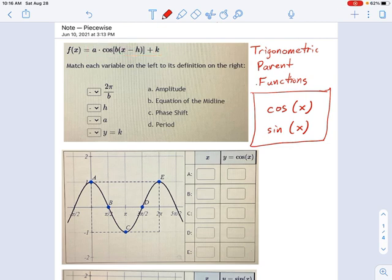That k value, for instance, right here at the end, that's called the midline. And I can write it as the equation of a midline because it's a vertical shift.